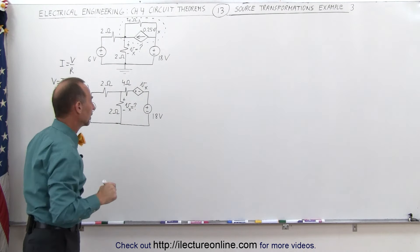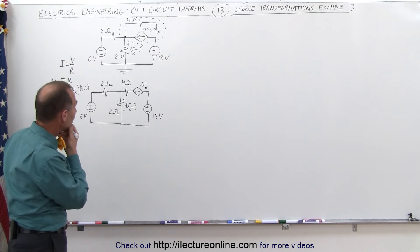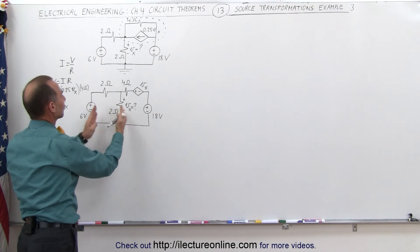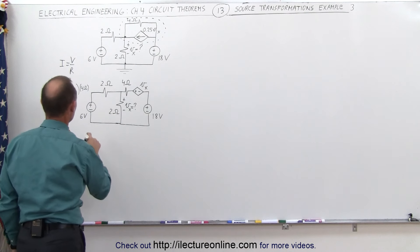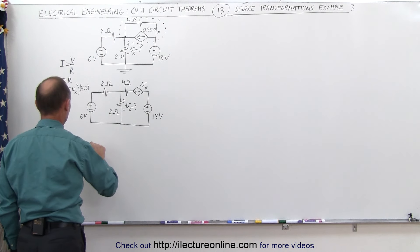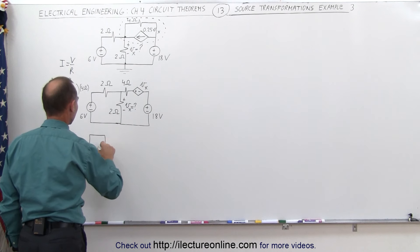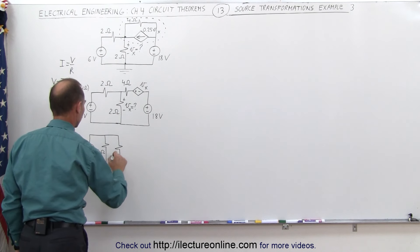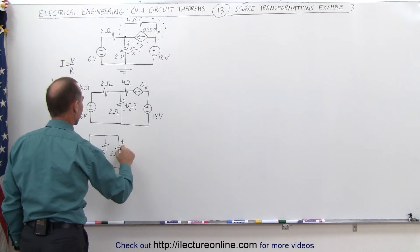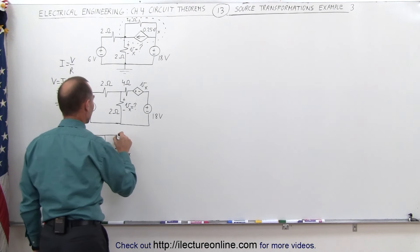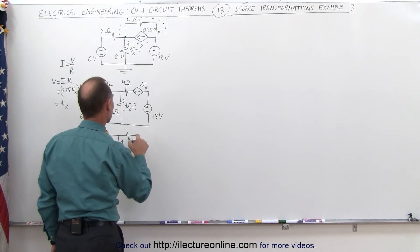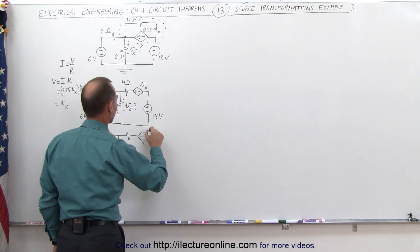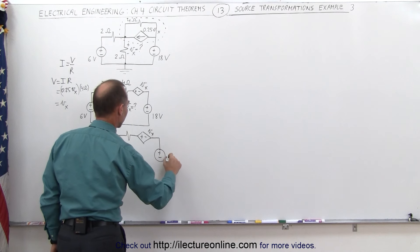What we can do next is convert this into a current source so we can combine those two resistors. This now becomes a current source. We'll have a 2 ohm resistor here along with the other 2 ohm resistor. We're still looking for voltage across those points — V_X. We still have our 4 ohm resistor, the dependent voltage source plus/minus V_X, and the independent voltage source of 18 volts on this side.